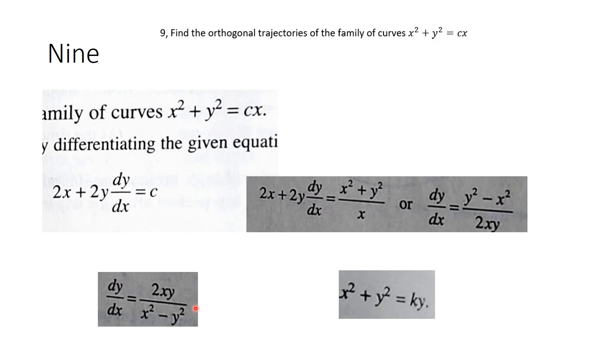But then I say, well, the orthogonal trajectory is going to be dx dy. Derivative of x, the derivative of y with respect to x is going to be the negative reciprocal of that.